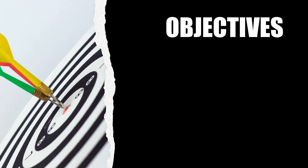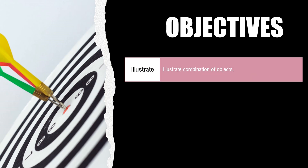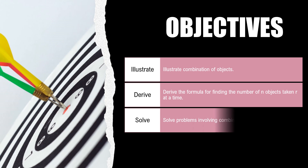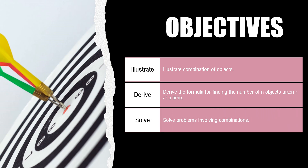We have the following objectives for today's lesson: illustrate combination of objects, derive the formula for finding the number of n objects taken r at a time, and solve problems involving combinations. Now let's start.